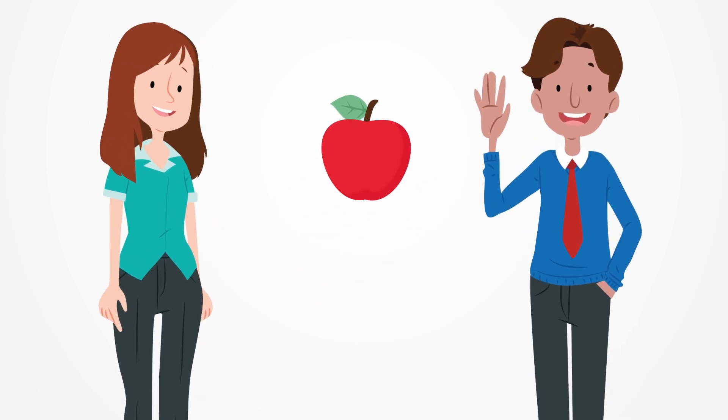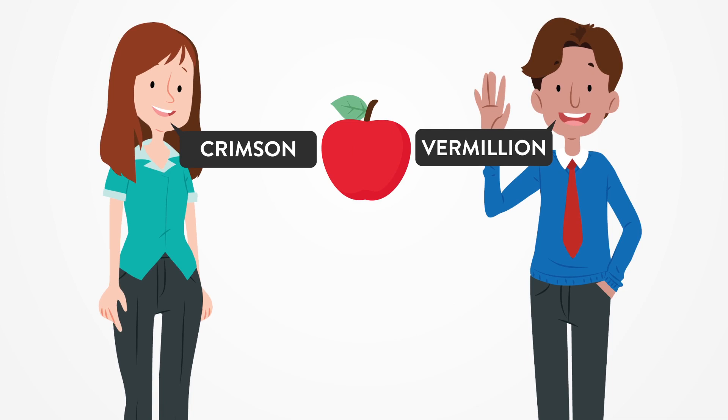For some, an apple can be expressed as crimson; for others, vermilion. Color perception is subjected to individual interpretation, and this makes color communication difficult and vague. To better understand precise color communication,